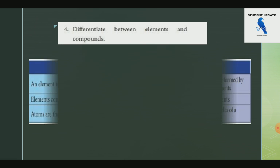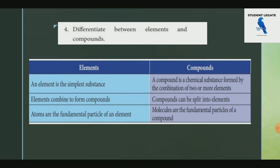The difference between a compound and an element: An element is a substance in its simplest form. A compound is formed when one or two elements combine chemically. In a compound, elements are combined chemically to form it. An atom is the fundamental particle of an element, while a molecule is the fundamental particle of a compound.